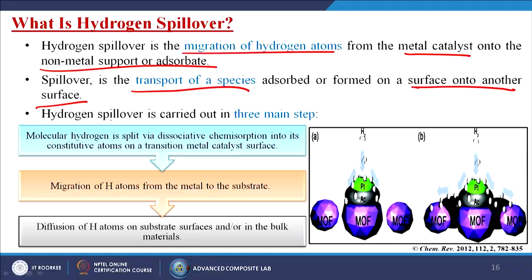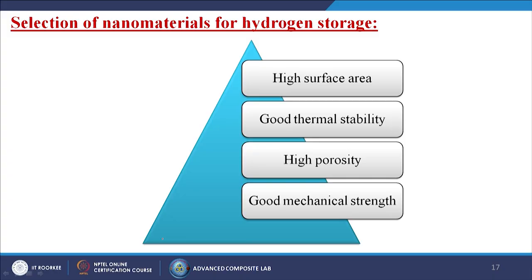Hydrogen spillover is carried out in three main steps. First, molecular hydrogen is split by dissociative chemisorption into its constituent atoms on a transition metal catalyst surface. Second, migration of H atoms from the metal to the substrate. Third, diffusion of H atoms on the substrate surface or into the bulk material. Simply: we have a material, apply temperature or heat to generate H⁺ ions, which migrate from the metal surface to the substrate and either sit on the surface or go inside the substrate itself — that is called hydrogen spillover.